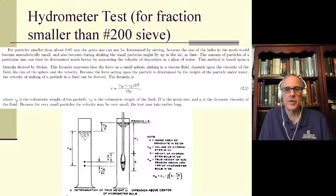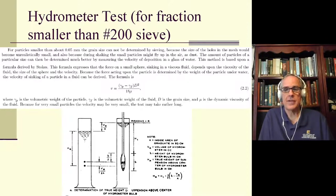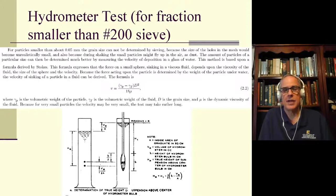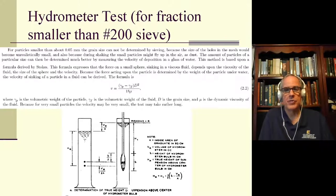For particles smaller than the 200 sieve, we use the hydrometer. This is a tricky test to run, which is why you don't always use it. Soil classification does not require the use of a hydrometer test — neither the Unified System nor AASHTO requires it. However, a hydrometer test is very useful when talking about properties of soils with very small particles. You need to know what that distribution is.